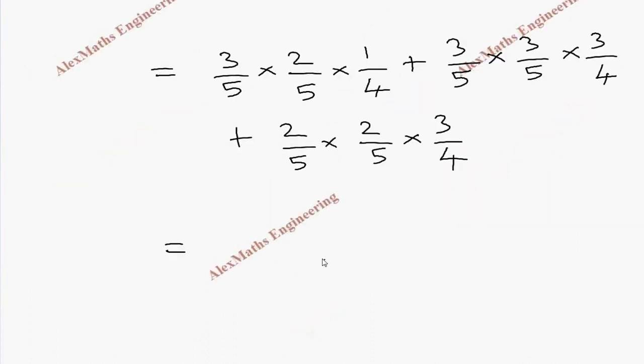We have common denominator which is 100. In the numerator it is 6 plus 27 plus 12. Totally it is 45 by 100.